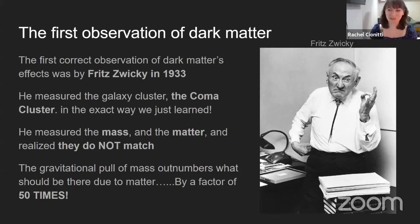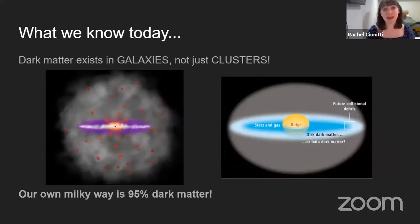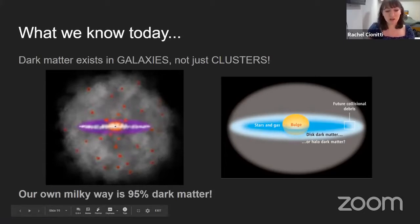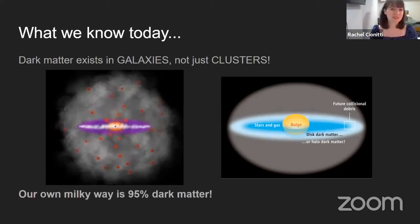He was a very interesting character, by the way, if you ever want to read about him — hilarious, but very important to the discovery of dark matter. Now, almost 100 years later, we know that dark matter exists not just in clusters like Fritz Zwicky found, but also in galaxies in these sort of halo forms. So they don't exist in the plane of galaxies as you might assume, but in a spherical shape around the galaxy. And our own Milky Way, for example — the galaxy we are sitting in right now — is 95% comprised of dark matter.